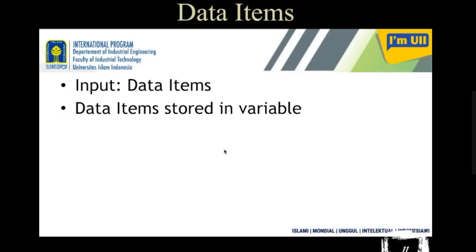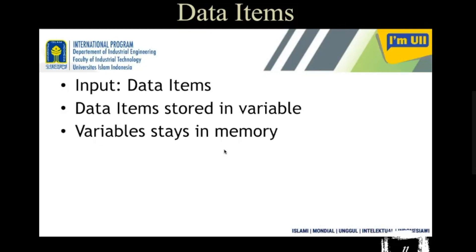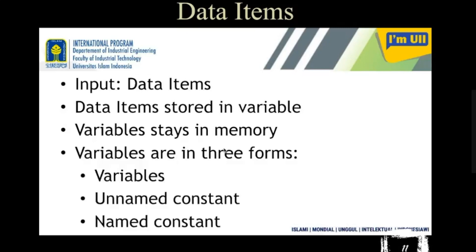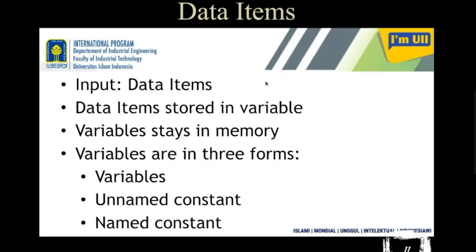In your program, some components are called variables, where you can store your data for processing and also for storing the output. Variables stay in memory — these variables are the memory location names, names of a memory location where the actual value of the data is stored.